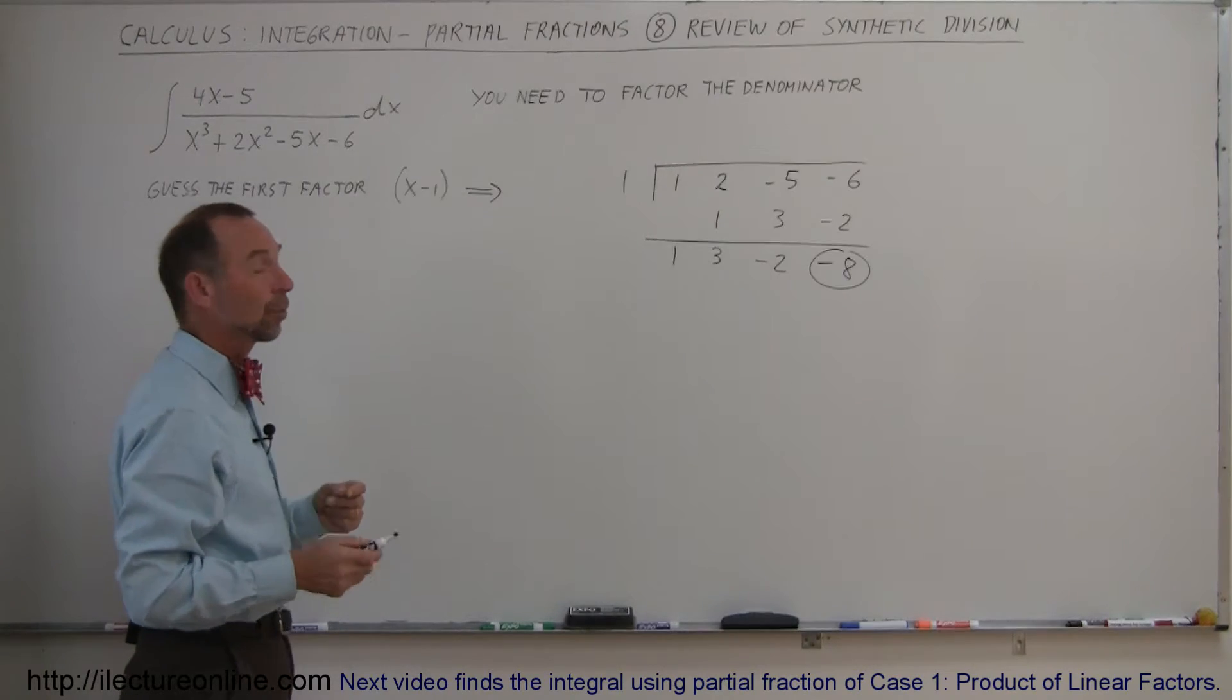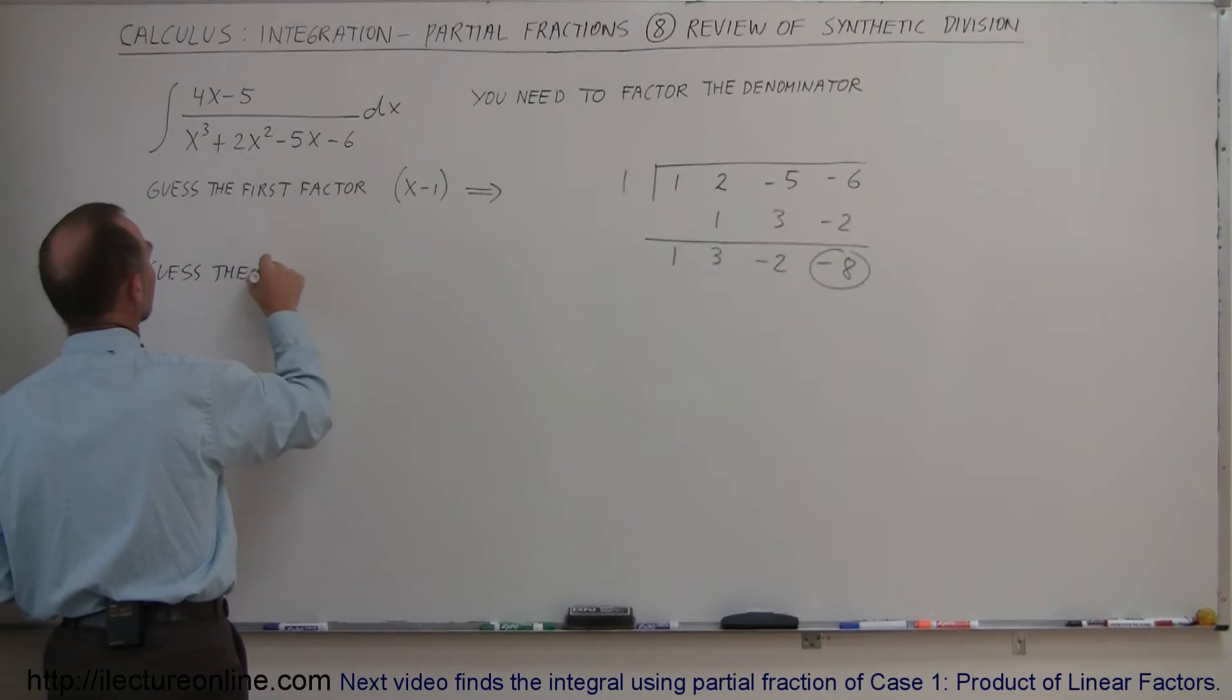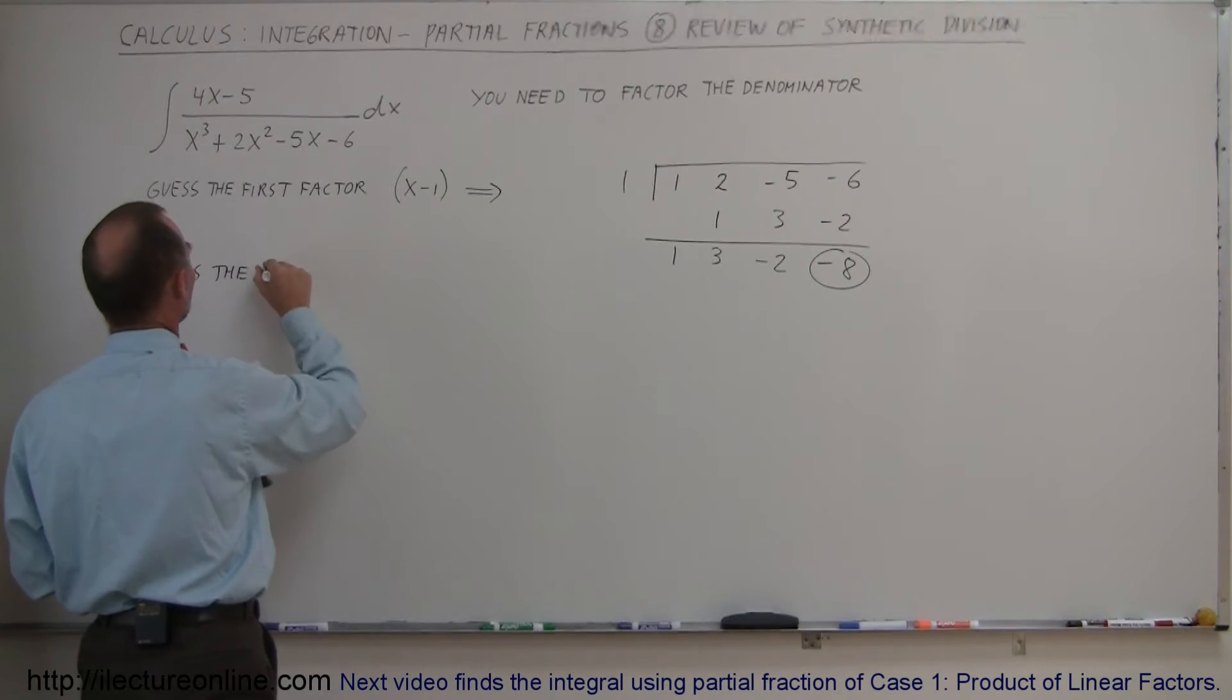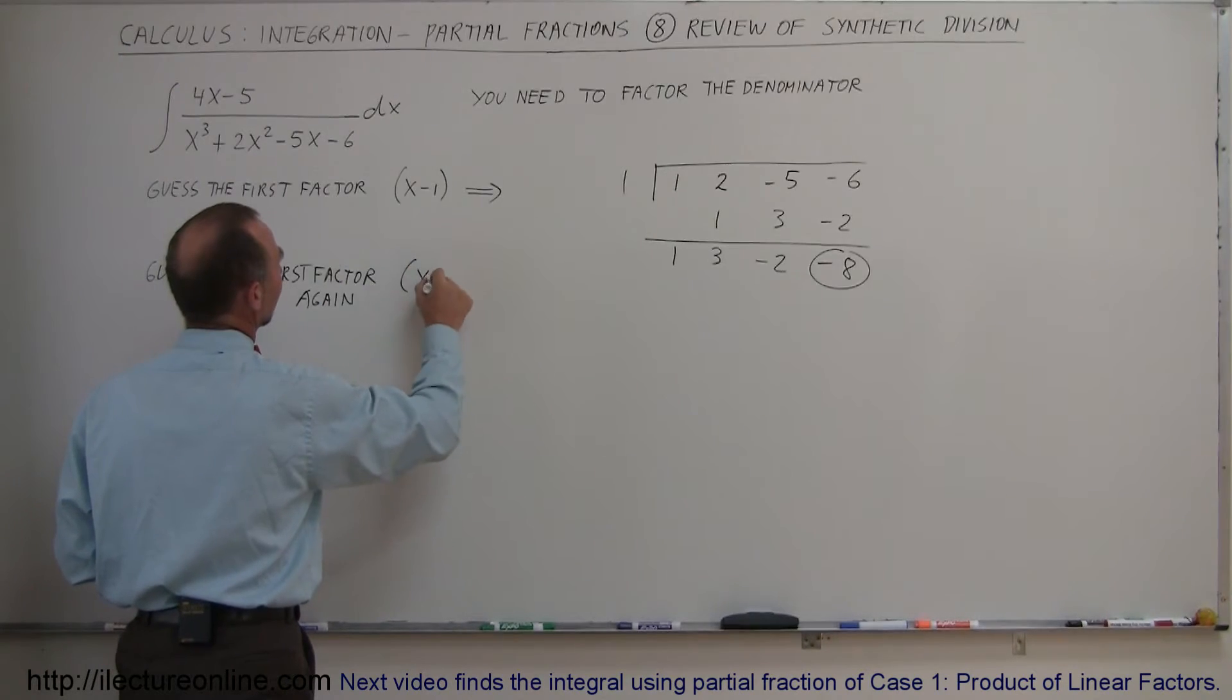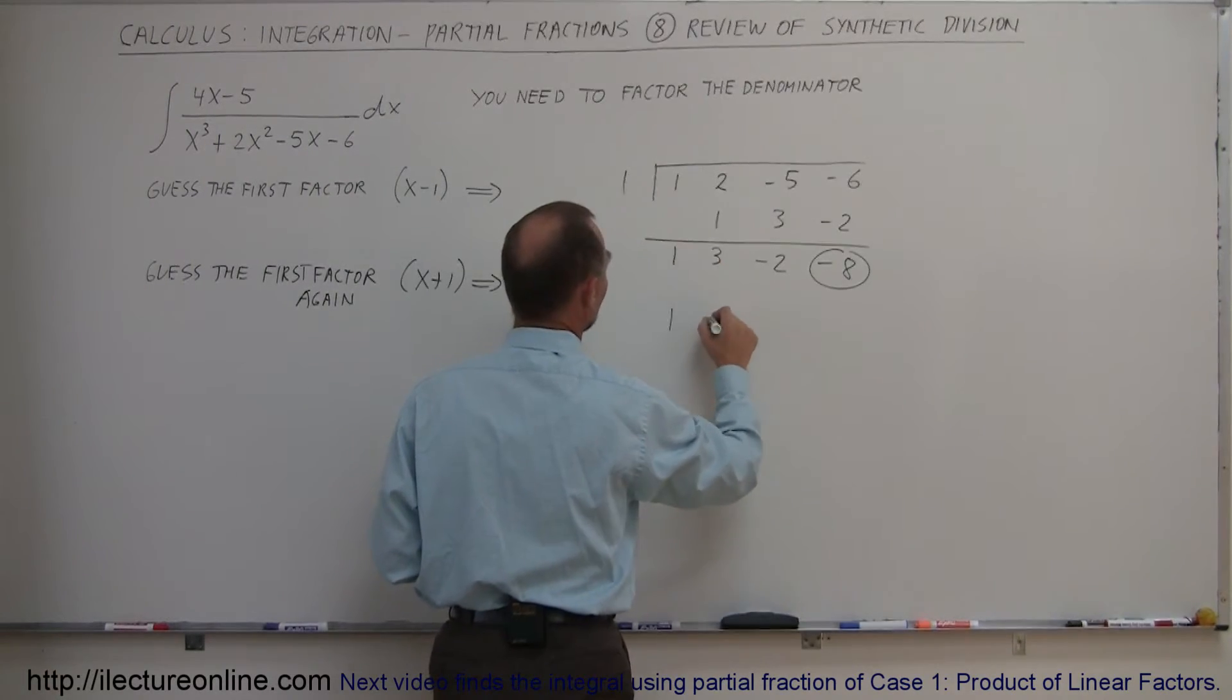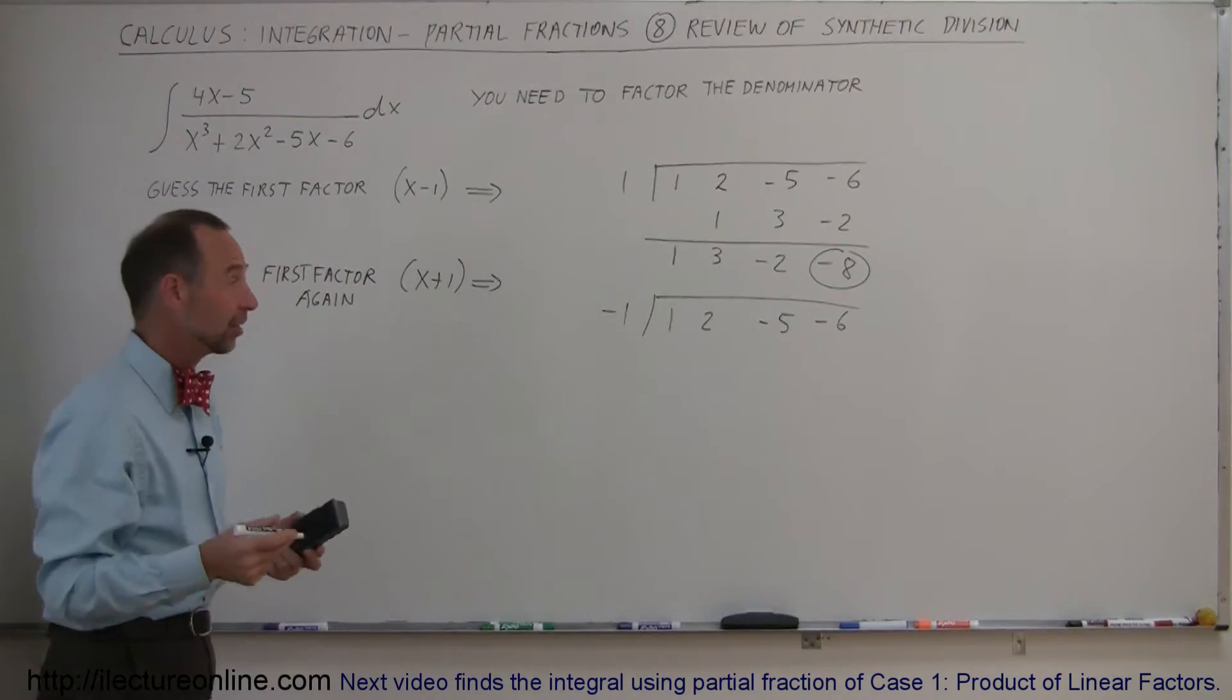What I like to do is, if minus 1 doesn't work, maybe plus 1 works. So guess the first factor again. Maybe I'll try x plus 1 this time. In that case, x has to be negative 1, so again we rewrite all the coefficients here: 1, 2, minus 5, minus 6. Instead of a 1 there, I plug in a negative 1, because if x plus 1 is one of the factors, then x must be negative 1.